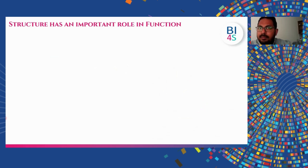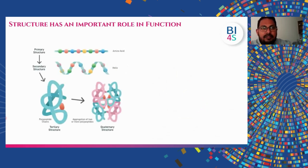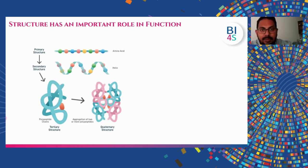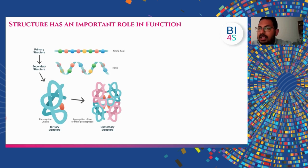Structure has an important role in function. From the previous lecture you have already learned about different protein structures. In the primary structure, amino acids are in sequential order. In the secondary structure, it forms different shapes — you can see a helical shape. In the tertiary structure you have a three-dimensional folding, and in the quaternary structure you have more folding with aggregation of more polypeptide chains.